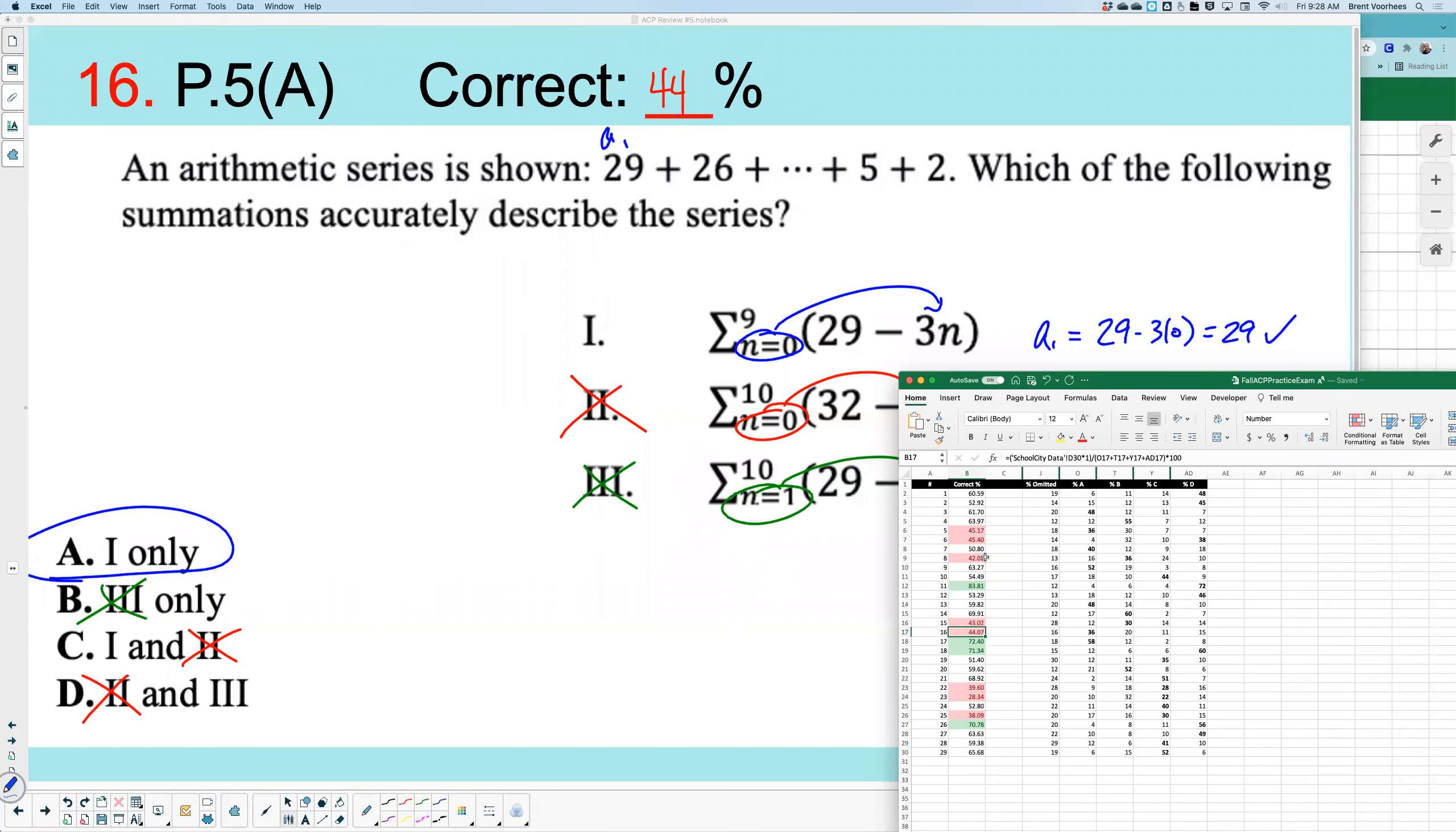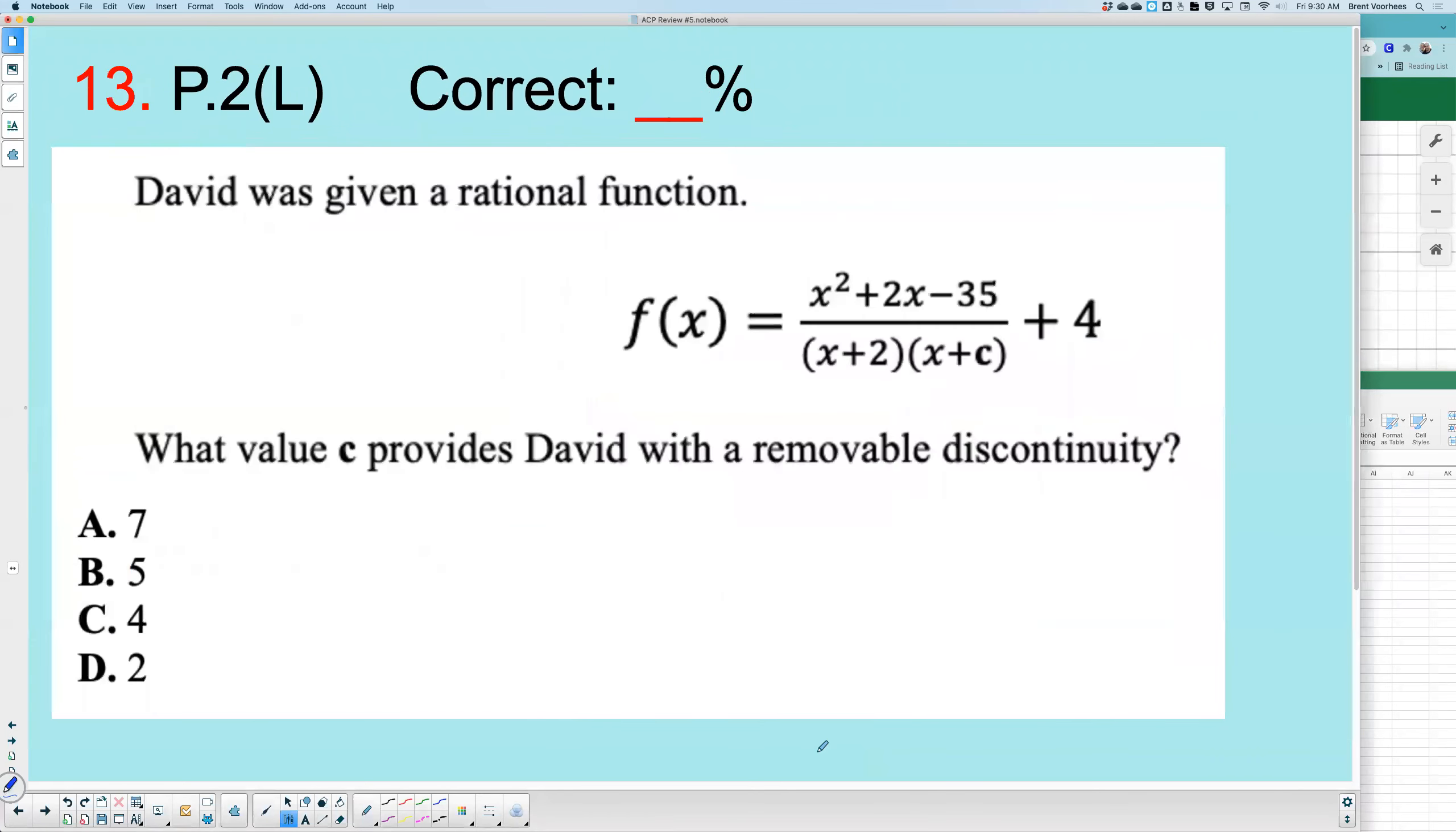All right, now the next lowest is number 5 at 45.2%. So 45% is number 5. So let's jump to number 5.